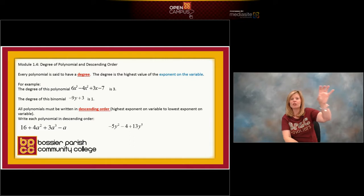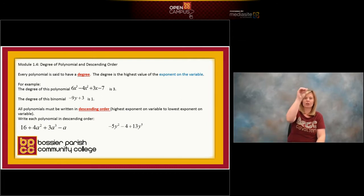When we write a polynomial in descending order, we want to start with the largest exponent to the smallest exponent. If you look at my example at the top, 6x³ - 4x² + 3x - 7, that is written correctly. It is in descending order. The exponent starts with a three, then goes to a two, then goes to a one, and that's what we want.